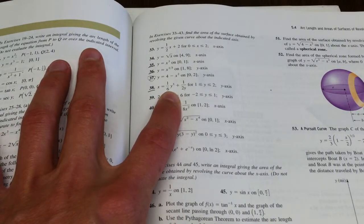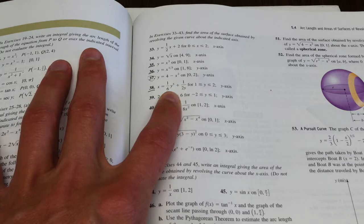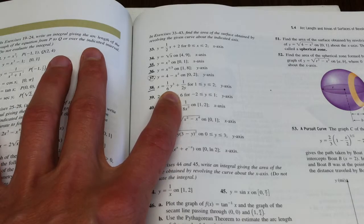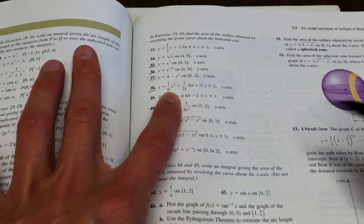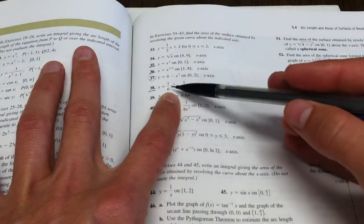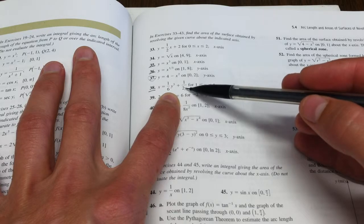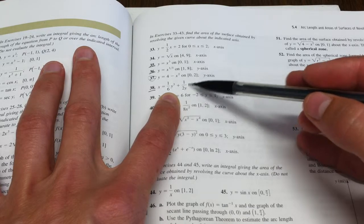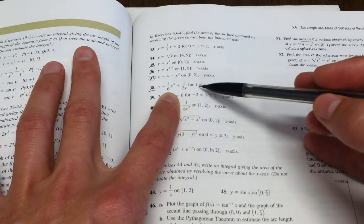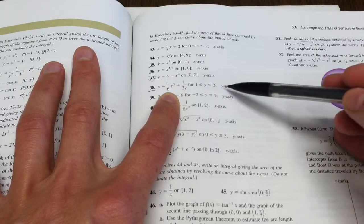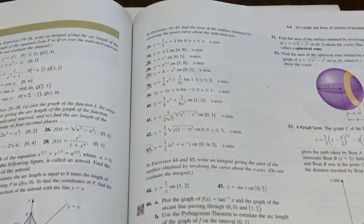The instructions say find the area of the surface obtained by revolving the given curve about the indicated axis. So I have x equals one-sixth y to the third plus one-half y to the negative one for y between one and two, rotated around the x-axis.